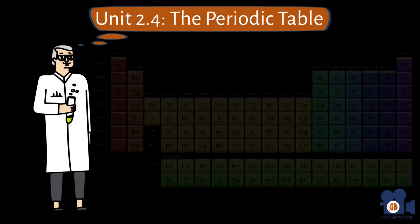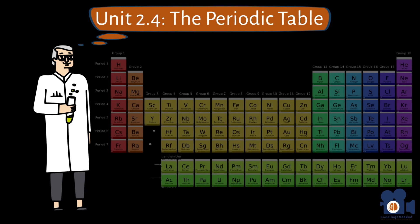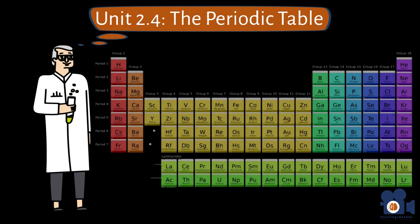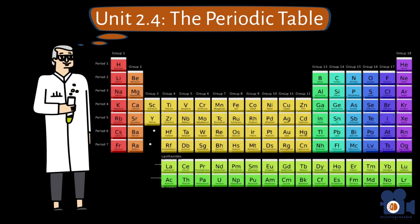As more and more elements were discovered by scientists in the 19th century, efforts were made to find patterns in order to classify the known elements in a systematic and predictable manner.